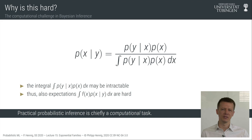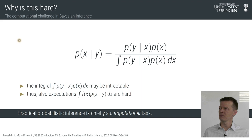We quickly noticed in lecture two that this process is unfortunately in general computationally very hard. The fundamental reason is that if you want to distribute truth over a space of hypotheses, you have to keep track of all of these hypotheses when reasoning about even a single one. To make a statement about the truth value of one hypothesis under the data, you have to compare to all other explanations and sum them out.